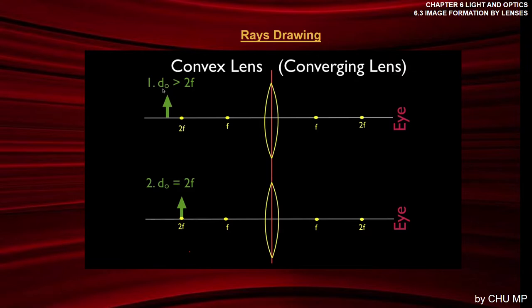You should notice that for all ray diagrams for all four optical objects — both mirrors and both lenses — the ray diagrams are drawn basically the same way. There are slight variations, but we can use the same rules for all four types. So you don't have to memorize all of them separately; you just need to know how to apply the rules in each case. We're going to draw three rays to locate the image.